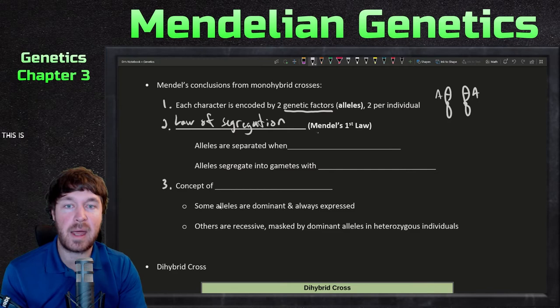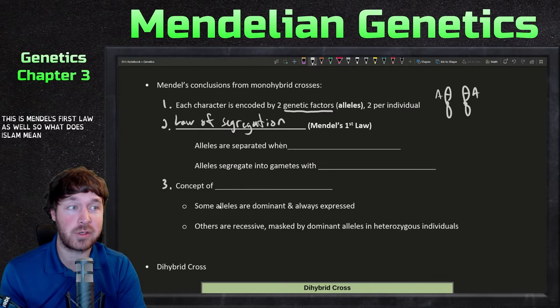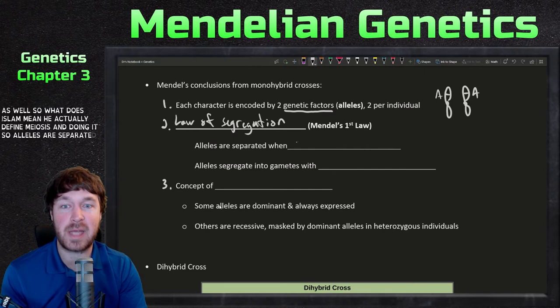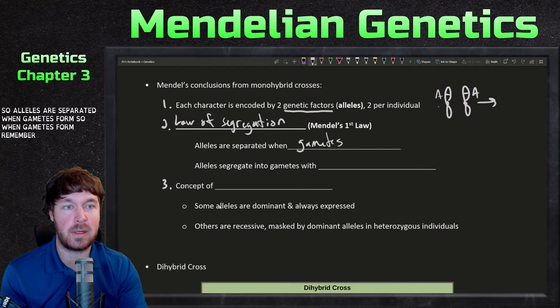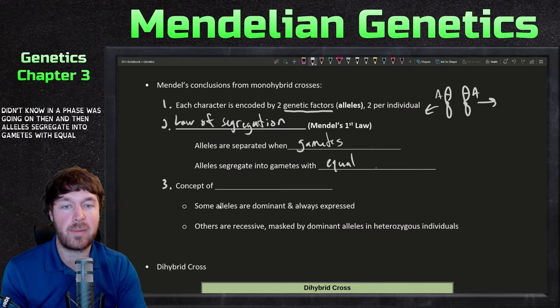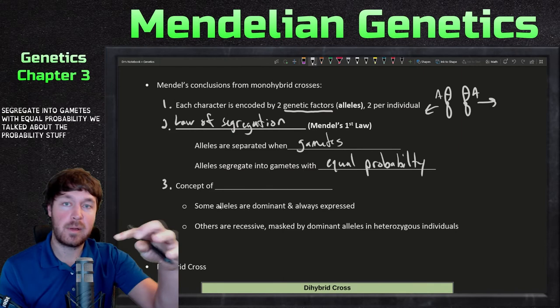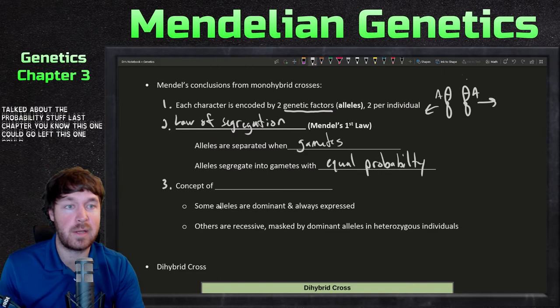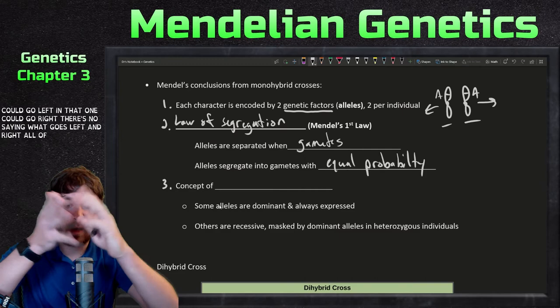The second conclusion is the law of segregation — this is Mendel's first law. This law means he actually defined meiosis in doing this. Alleles are separated when gametes form; they go to opposite cells during anaphase. Alleles segregate into gametes with equal probability. We talked about the probability stuff last video — this one could go left or right; there's no saying what goes where. It's all about random assortment.